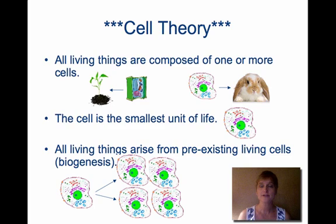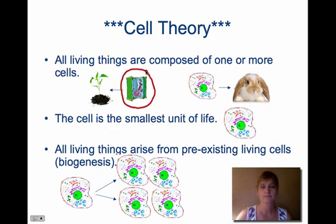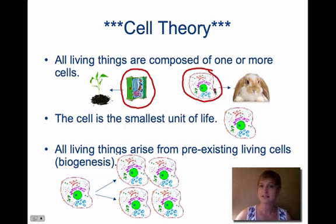Cell theory is composed of three ideas. First, all living things are composed of one or more cells. So this is a plant cell, and all living things — like this plant — would be made of plant cells. Here's an animal cell, and every living thing that's an animal would be made up of animal cells. So like this rabbit is made up of lots of these cells.